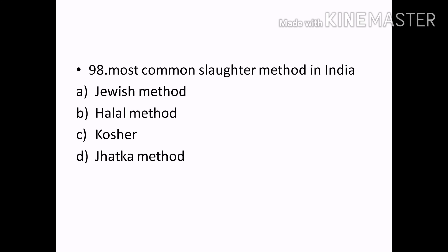Most common slaughter method in India is: Options — Jewish method, Halal method, Kosher method, Jhatka method. Correct answer: Option B — Halal method.